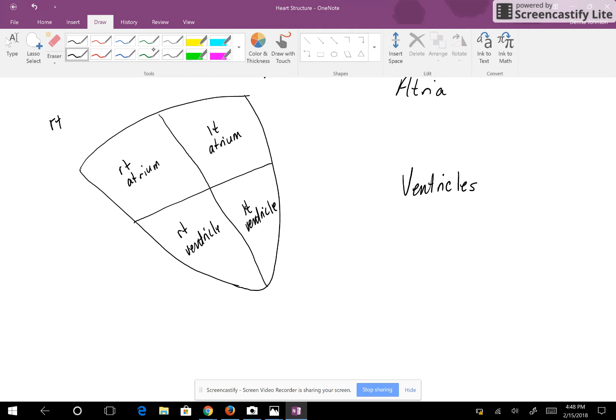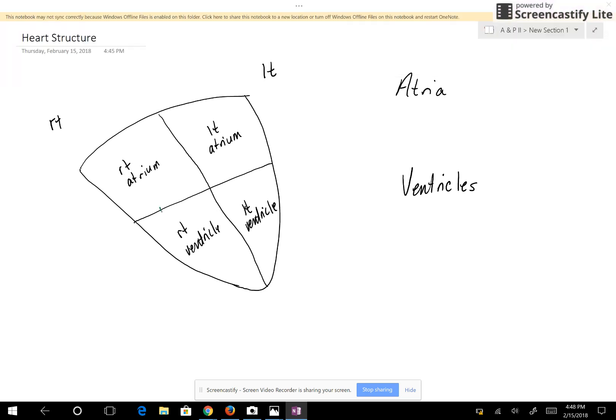Here we're going to put in a valve between the right atrium and the right ventricle, and another valve goes in between the left atrium and the left ventricle. Because those valves are between the atrium and the ventricles, they're called atrioventricular valves.